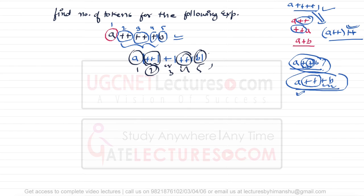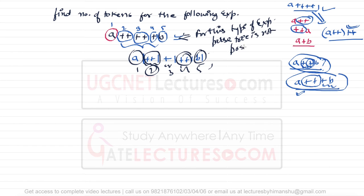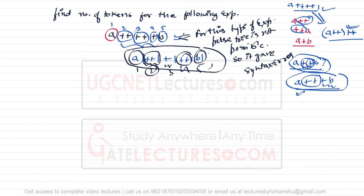For this type of expression, a parse tree is not possible, so it will give a syntax error. But there is no problem with the tokenizer — the tokenizer will not find any issue. The correct tokenization method for a++++++b should be: 'a++' as one token, '++' as another, '+' as a single plus, and 'b'. We'll see this in more detail next.